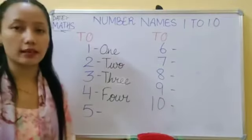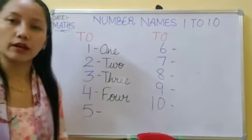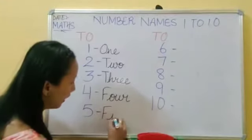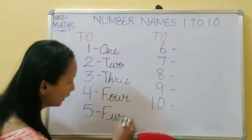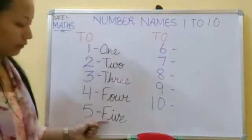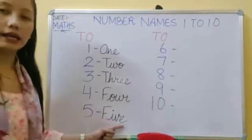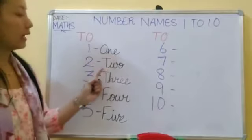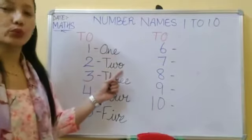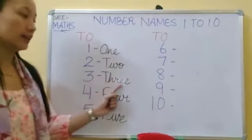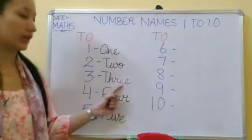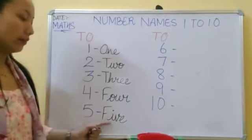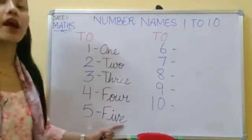Number 5 — students, tell me what is the spelling of 5? Capital F, I, V, E — FIVE. Let's recall: O N E — 1, T W O — 2, T H R E E — 3, F O U R — 4, F I V E — 5.